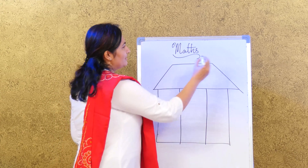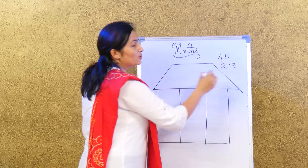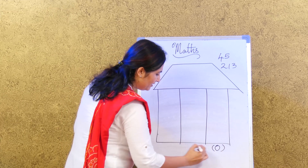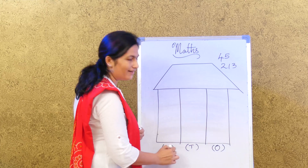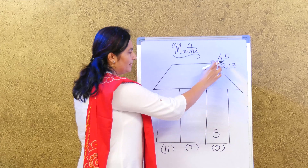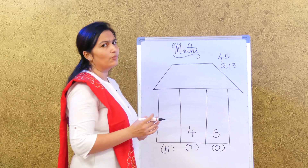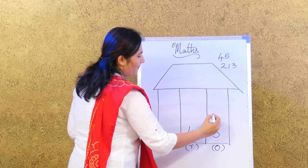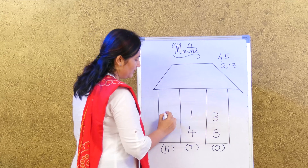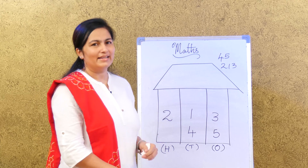Let's take two examples from your textbook: 45 and 213. Mark the columns — this is the 1s, this is the 10s, this is the 100s. For 45: 5 goes in the ones room and 4 goes in the tens room. For 213: 3 goes in the ones room, 1 goes in the tens room, and 2 goes in the hundreds room. Go ahead and finish those examples.